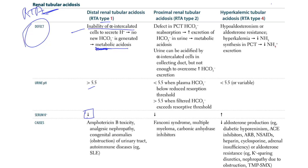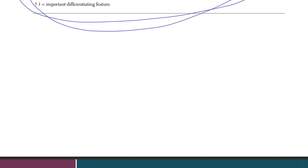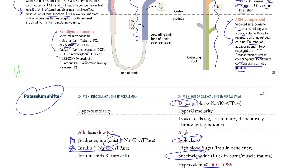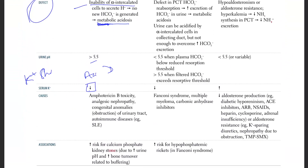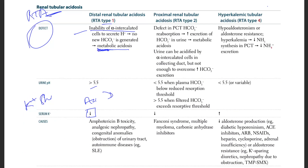In acidosis, potassium shifts out of the cell, so we end up with low serum potassium. The exact mechanism here is a bit uncertain, but the key finding is hypokalemia.